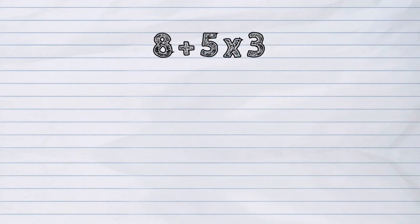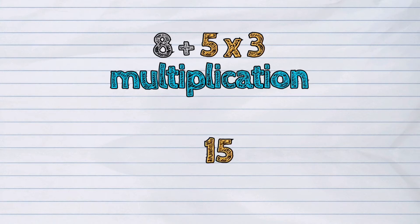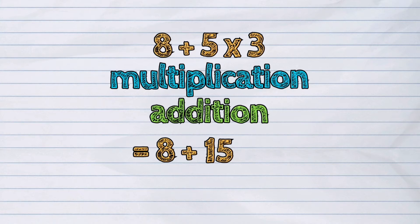Next, 8 plus 5 times 3. The first operation in this expression is multiplication. 5 times 3 is 15. Then addition. 8 plus 15 is 23.